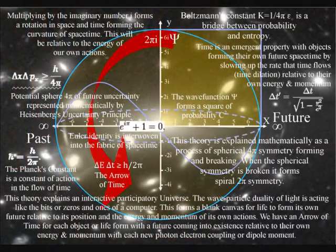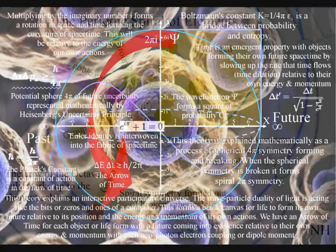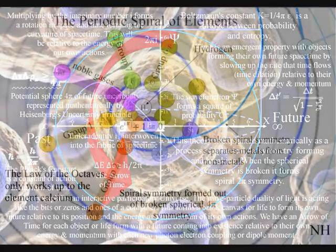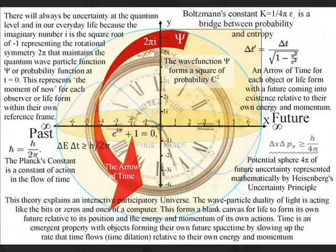This process is totally universal and interactive. From the largest object to the smallest creature, right down to the smallest element of the periodic table, will slow the rate that time flows, forming a curvature of spacetime relative to its own energy or mass.